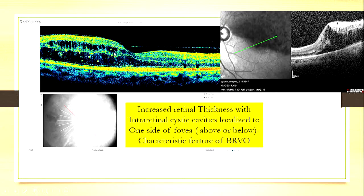When you see the edema to be more on one side — specifically in the vertical scan — that means one side, up or down, has more edema. What does it mean? BRVO. The side which has more swelling is edema. And once it resolves, if it's ischemic, that may become the thinner part — so you know that this is the ischemic component of that BRVO. Looking at the OCT, you can say this is a BRVO, this is not a diabetic. On the other hand, if this was in the horizontal meridian — temporal or nasal — then it could be a diabetic.